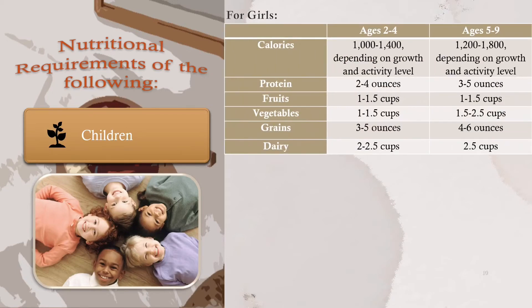For girls: The nutrients required are calories, protein, fruits, vegetables, grains, and dairy. The side tables show the RDA for ages 2 to 4 and ages 5 to 9.